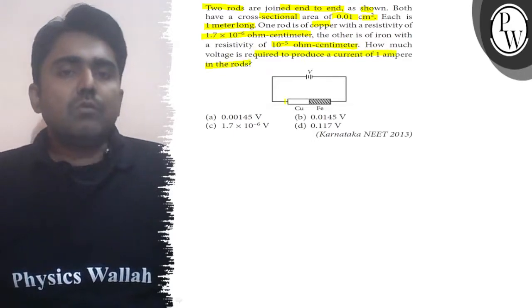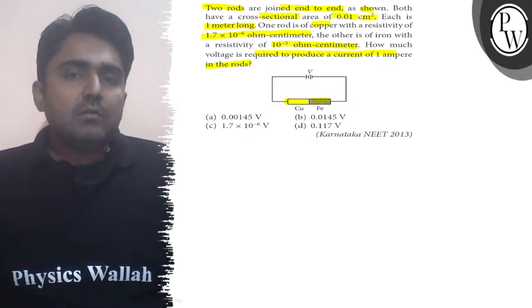This diagram is given. Two copper and iron rods are connected in series. Karnataka NEET 2013 question, let's solve it.